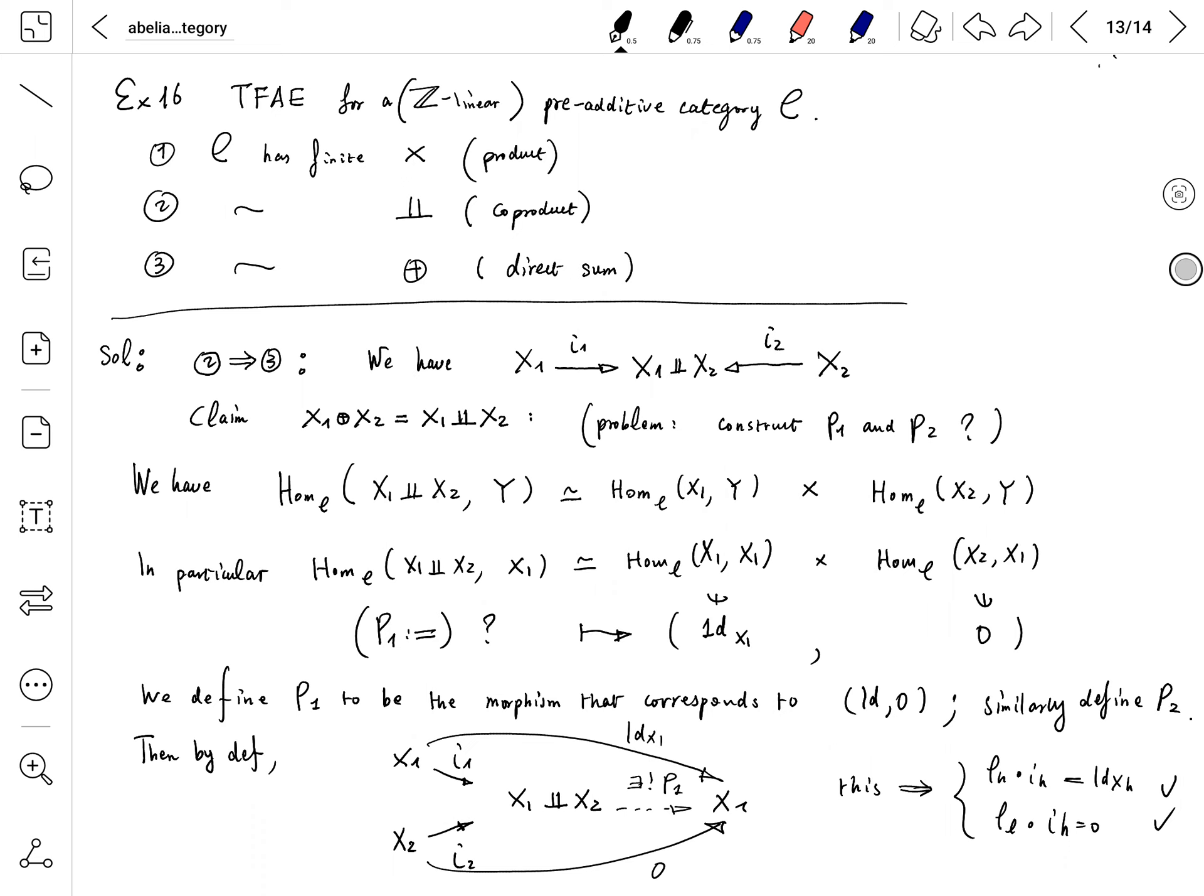First statement: pre-additive category C has finite product. Second, it has finite coproduct. Third, it has finite direct sum. Direct sum is sometimes called biproduct.